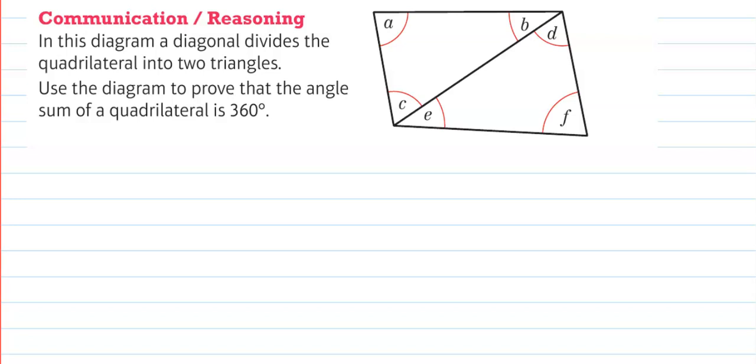In this question, we need to prove that a diagonal divides the quadrilateral into two triangles. Use the diagram to prove that the angle sum of a quadrilateral is 360 degrees.